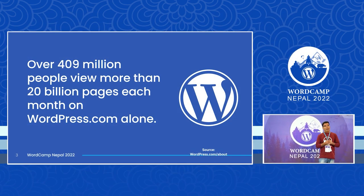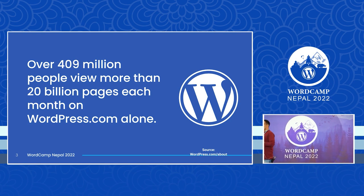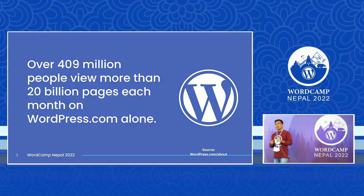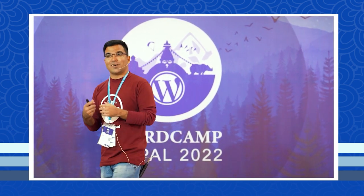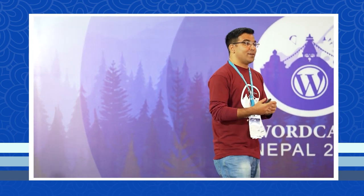Here's an interesting stat: over 409 million people view more than 20 billion pages each month on WordPress.com, which is a single site. Imagine there are thousands of sites with thousands of pages and millions of people. So if you write something in the right way, there are good chances your content will be read and viewed, and the product you're promoting will reach the right audience.